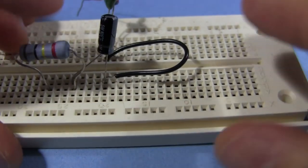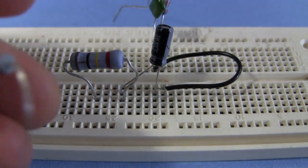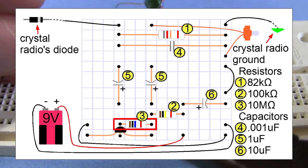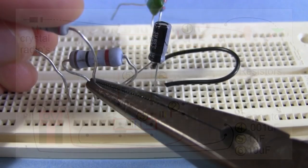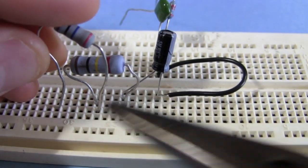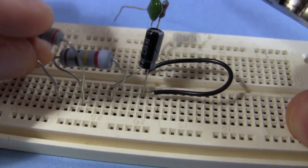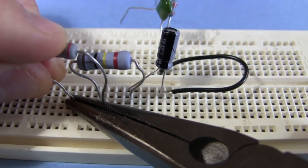I'm using the pliers because my wires are so thick. Next take the 10 mega ohm resistor. And plug one end into a column beside the resistor you just plugged in. And then the other end, again, about two holes, three holes away. So there's two holes between them.